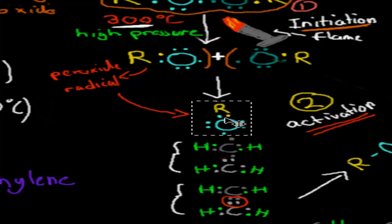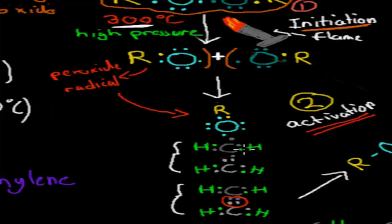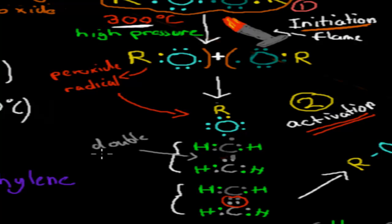Once the oxygen binds it has eight electrons and is happy. The first carbon is also happy with eight electrons. But the problem is the second carbon is no longer happy — it's not sharing its second electron because the double bond has been broken. When the oxygen steals one of the electrons, the double bond breaks.